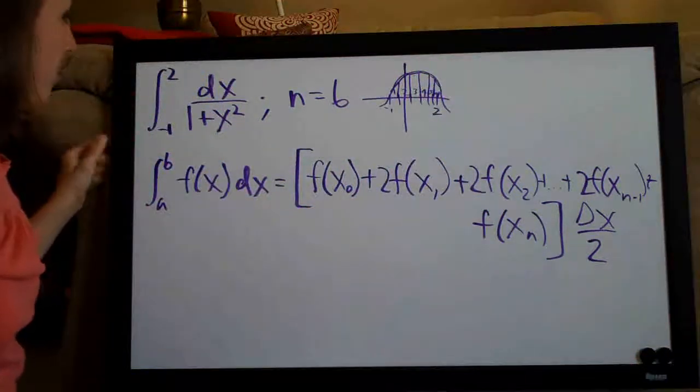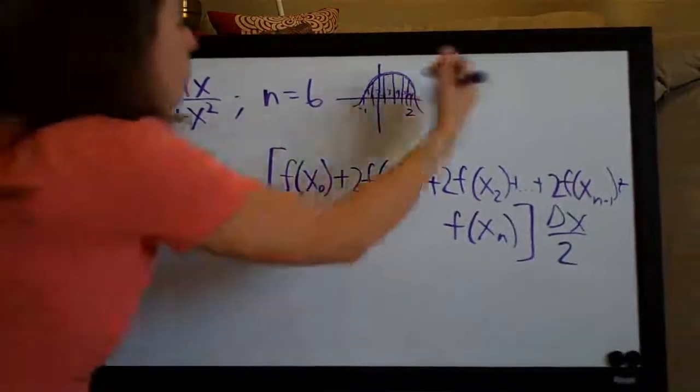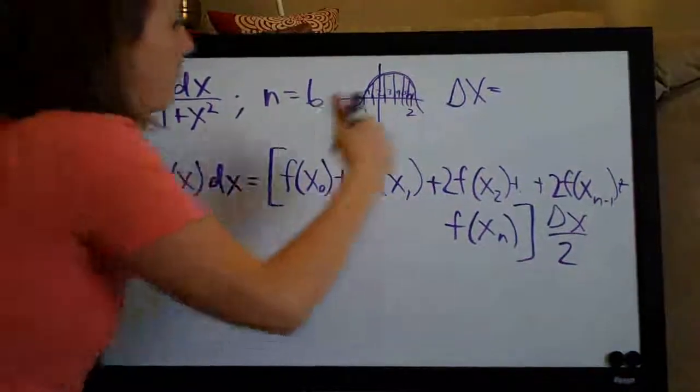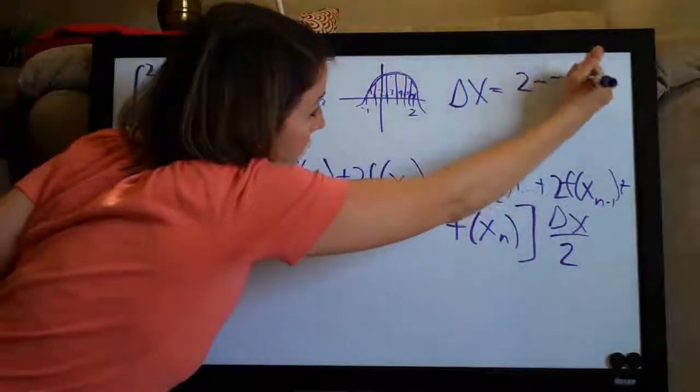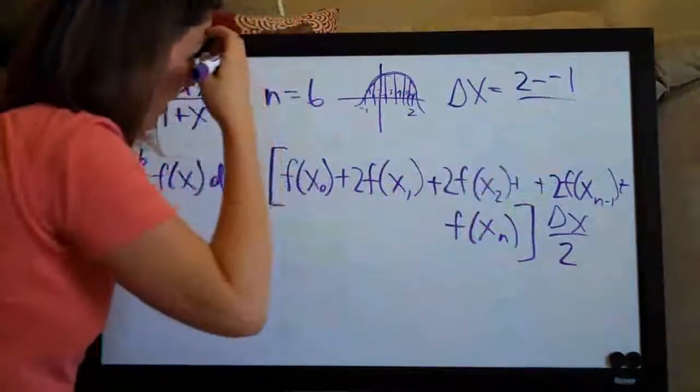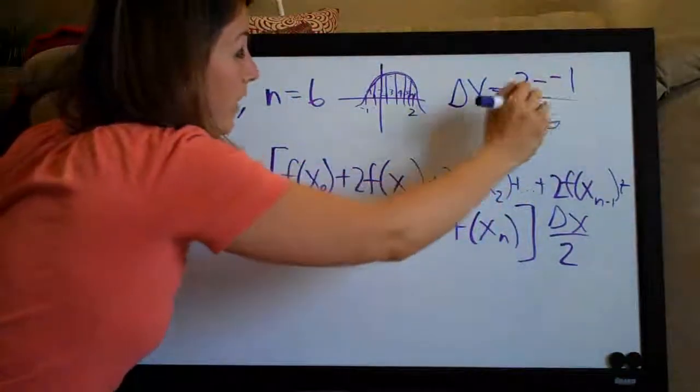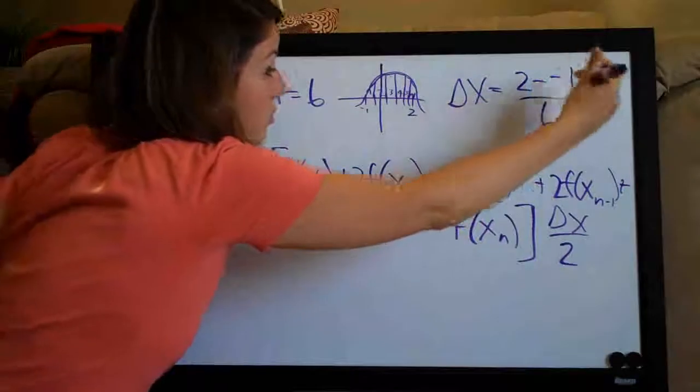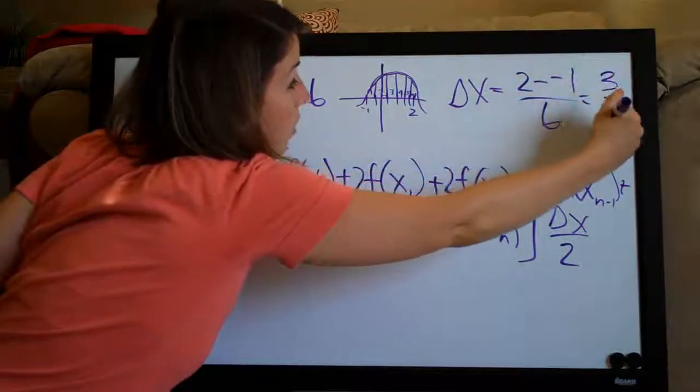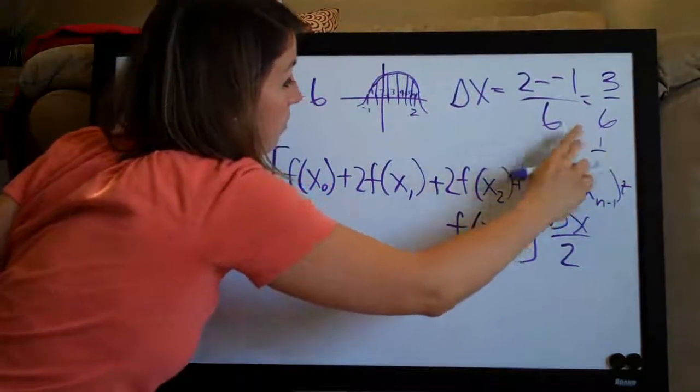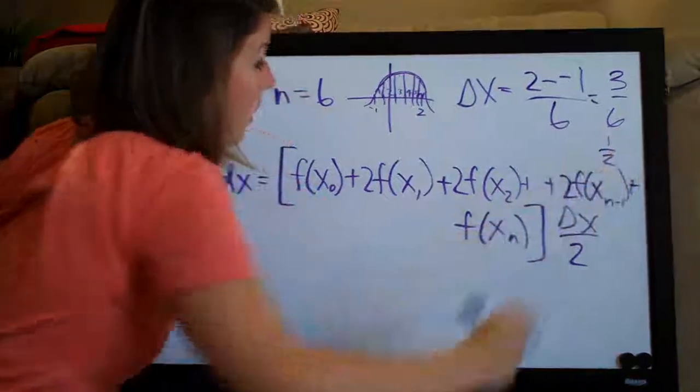So if our graph, right, is like this and here's negative 1 and here's 2, they want us to divide this into 6 sections. So that we can do something like that to approximate the area. But anyway, it's actually really simple. All we do is to find delta x, we do the top number minus the bottom number, 2 minus negative 1 and we divide by n, which they've given us. So we've got 2 minus negative 1, which is actually 2 plus 1, which is 3 over 6. So delta x is, oopsies, delta x is 1 half.